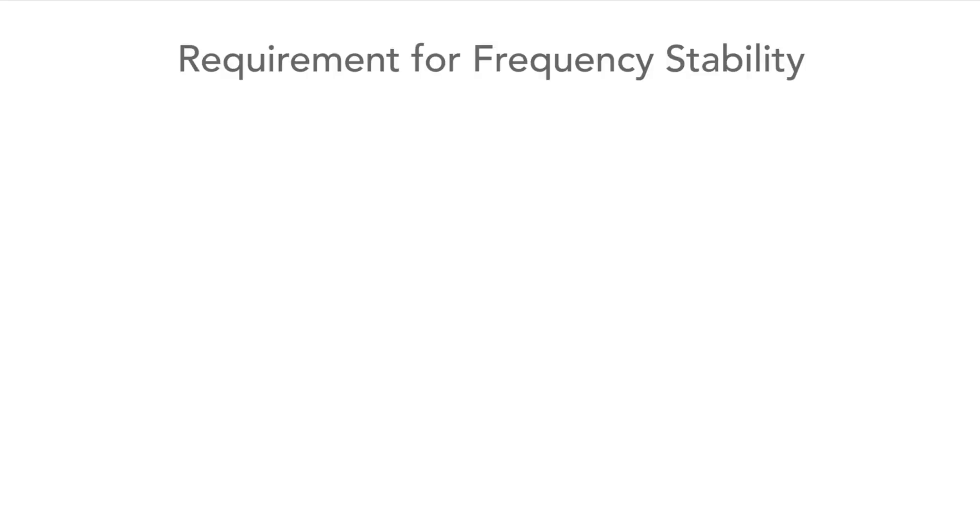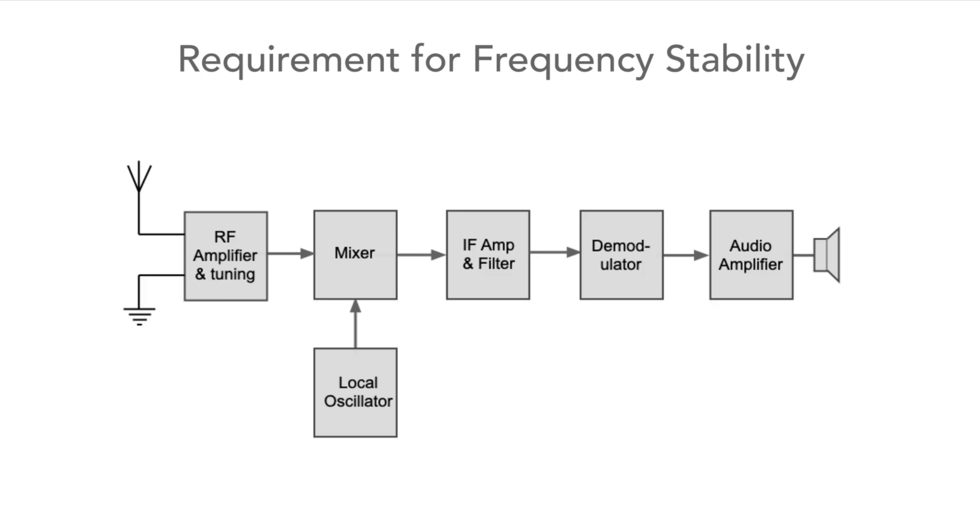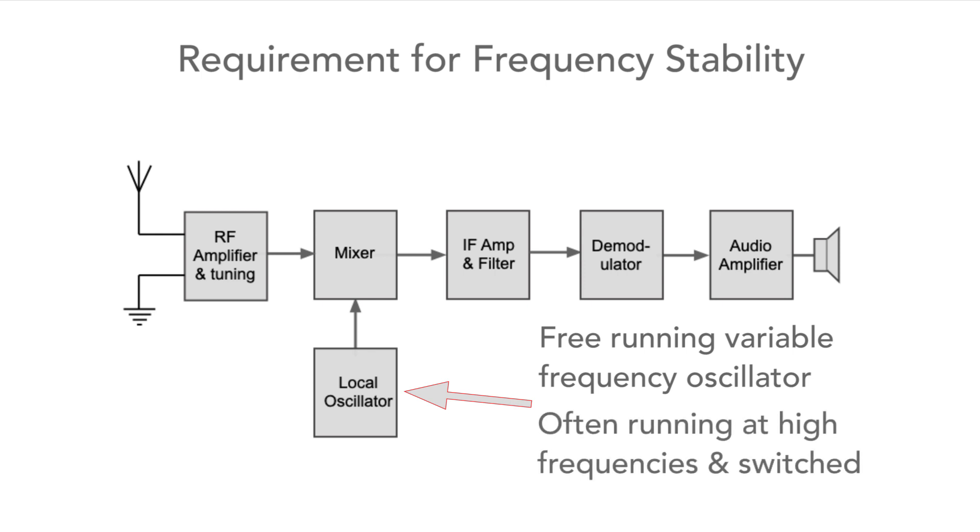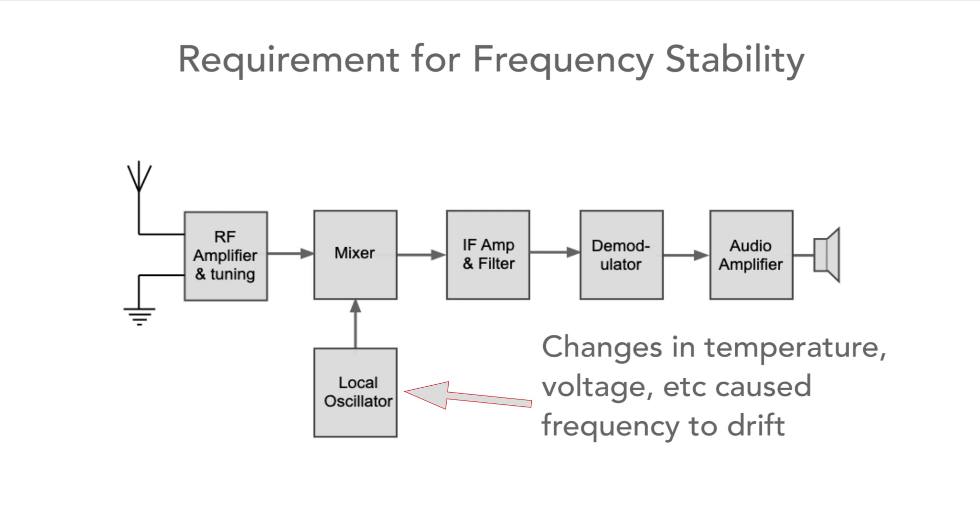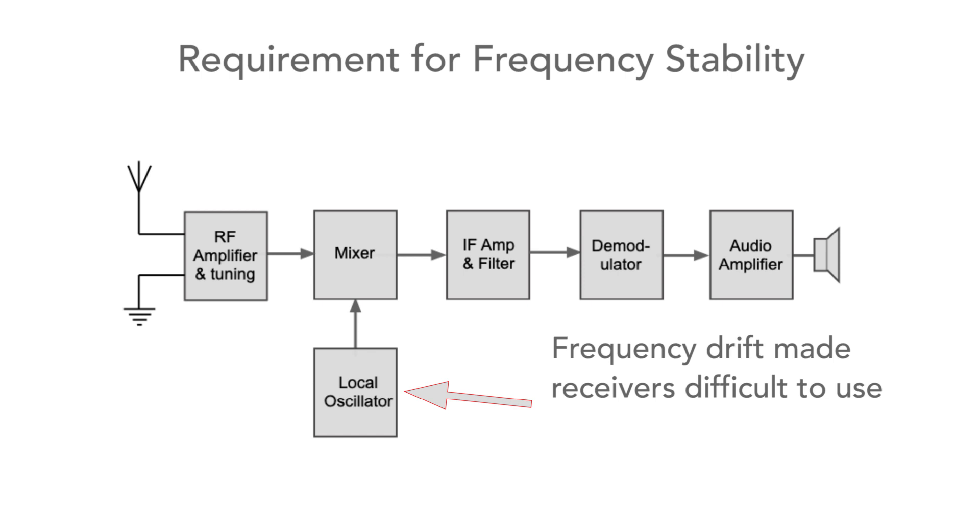Another reason for using a double conversion superhet occurred before the advent of frequency synthesizers. Up until then, radio receivers had suffered from drift as the local oscillator was a free-running variable frequency oscillator. Often needing to run at high frequencies and also be switched for different bands, this was far from ideal. Changes in temperature, voltage and the like caused the circuit to drift in frequency, and of course this made using these receivers quite difficult at times.